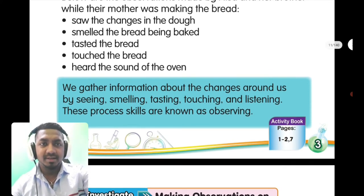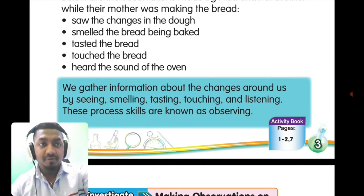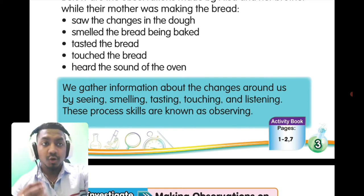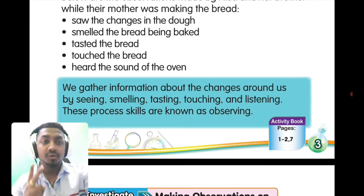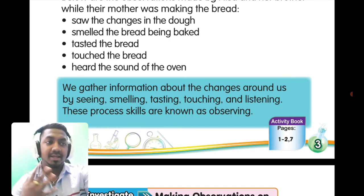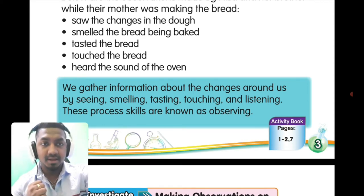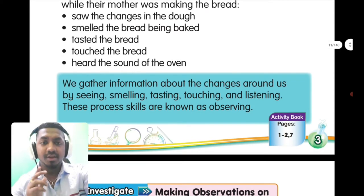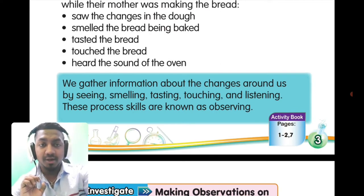We observe because we want to gather information about the changes around us. How do we observe? Number one: by seeing. Number two: by smelling. Number three: by tasting. Number four: by touching. And number five: by listening. These process skills are known as observing — this is how we make an observation.